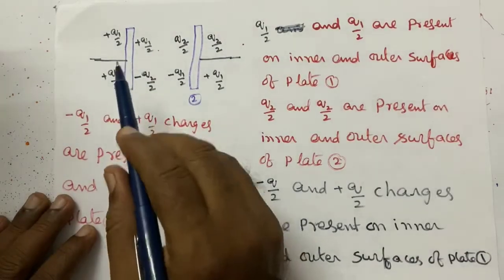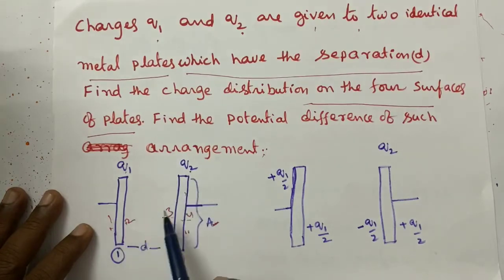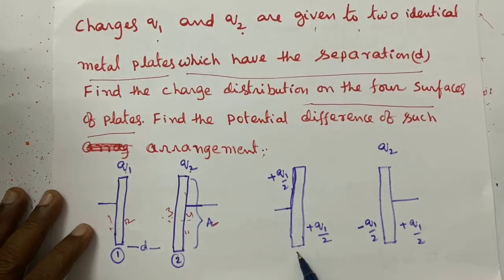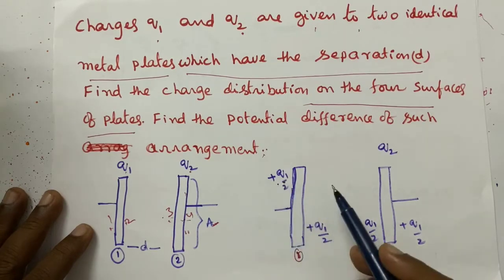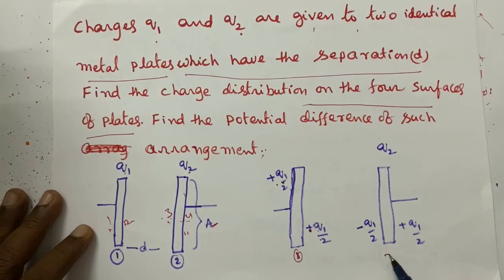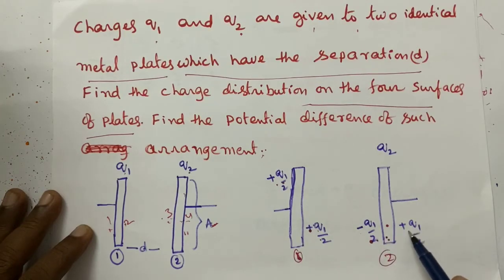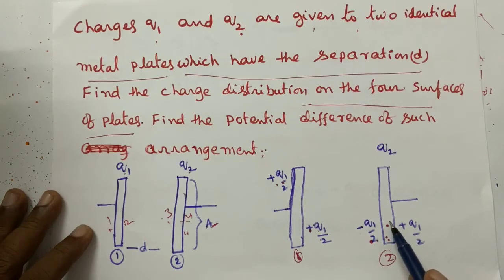Initially, charges Q1 and Q2 are given to the two identical metal plates. The charge Q1 on metal plate one is divided equally: plus Q1/2 on the outer surface and plus Q1/2 on the inner surface. Because metal plate two is very close to plate one, by induction, minus Q1/2 is induced on the inner surface and plus Q1/2 on the outer surface of metal plate two.